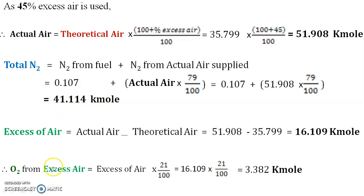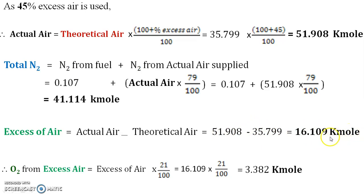For oxygen, it is very important to find the excess air first, because oxygen is only available from the excess air. Excess air is calculated by subtracting the theoretical air from the actual air. You will get the excess air in kilomoles. From the excess air, find how much oxygen is present using the formula: excess air multiplied by 21/100.